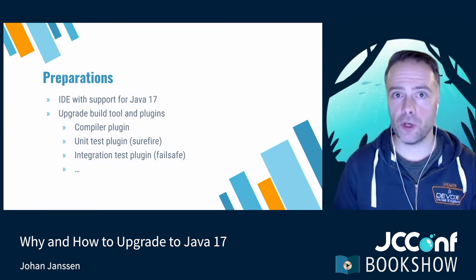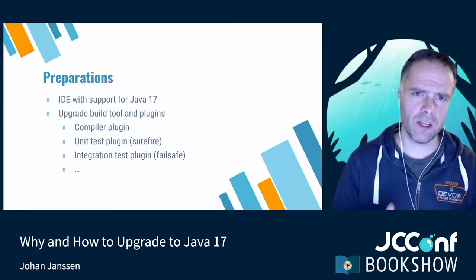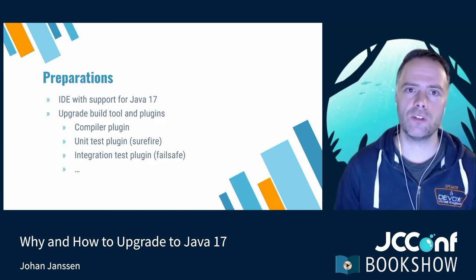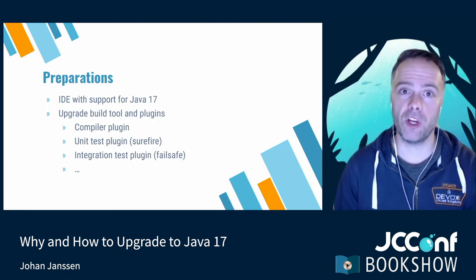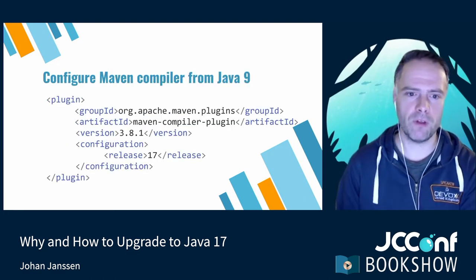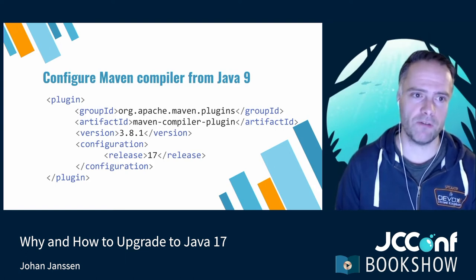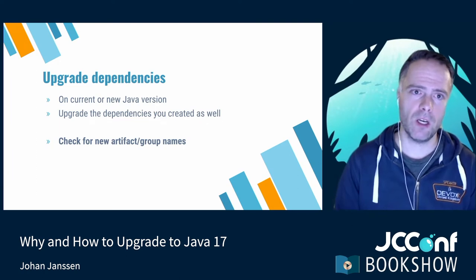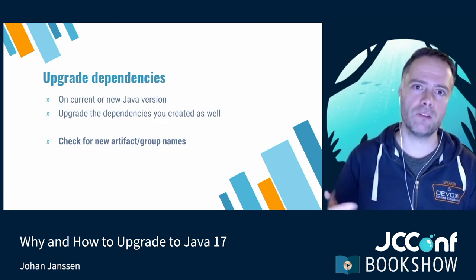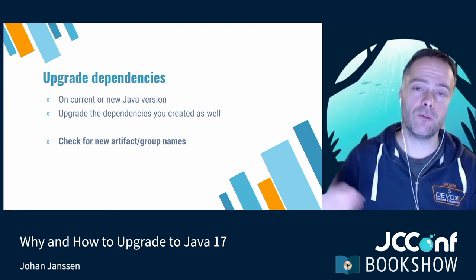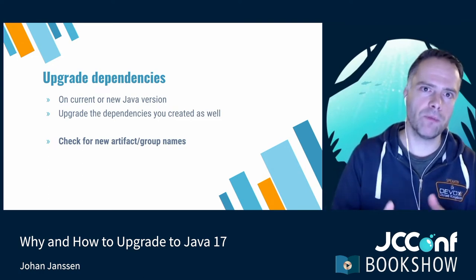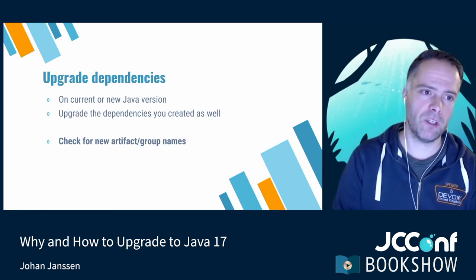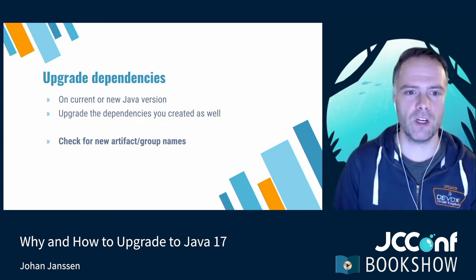For the ingredients: make sure your IDE supports the latest version of Java and that the compiler plugin and other plugins are up to date — especially with Maven — otherwise things might still be run on old versions. In Maven, you can easily specify the release version as Java 17 and you're good to go. Upgrading dependencies is one of the most important things while upgrading Java. If you keep dependencies always up to date, a Java upgrade becomes a breeze.